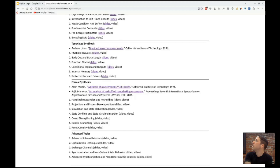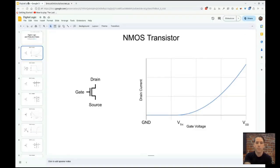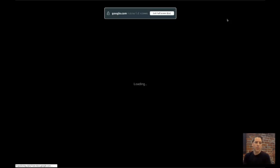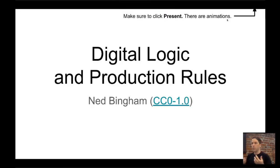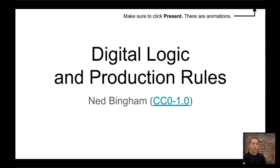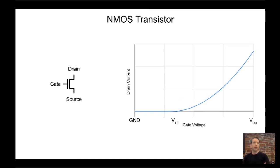So let's jump into digital logic. This class is designed to be taken by people who have some CS background — programming — and so we're going to start with the very basics. With digital logic, there are two basic devices. These are both three-terminal devices; they're transistors: the NMOS transistor and the PMOS transistor.